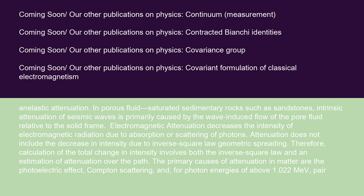Electromagnetic attenuation decreases the intensity of electromagnetic radiation due to absorption or scattering of photons. Attenuation does not include the decrease in intensity due to inverse-square law geometric spreading; therefore, calculation of the total change in intensity involves both the inverse-square law and an estimation of attenuation over the path. The primary causes of attenuation in matter are the photoelectric effect, Compton scattering, and — for photon energies above 1.022 MeV — pair production.